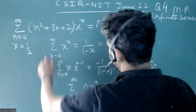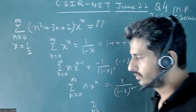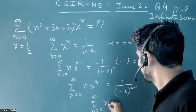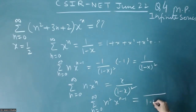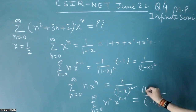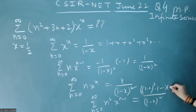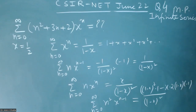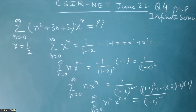Now because we want n², take the derivative: summation n equal to zero to infinity of n²·x^(n-1) equals, using the quotient rule — denominator squared times derivative of numerator minus numerator times derivative of denominator, which gives 2(1-x)·(-1) in the numerator.